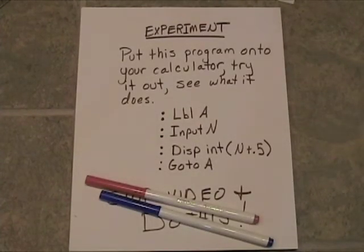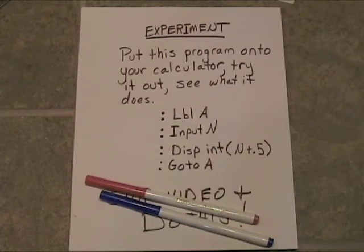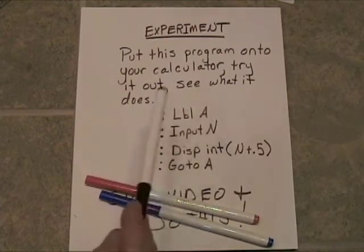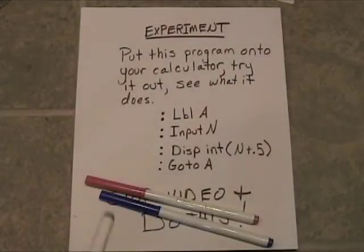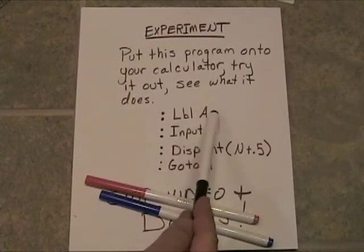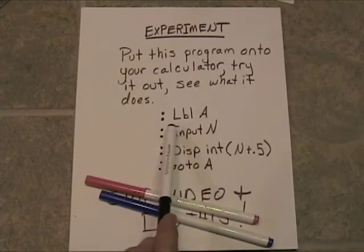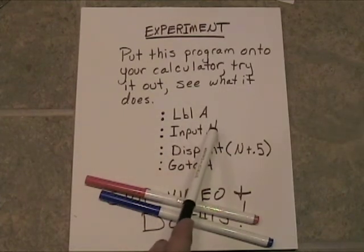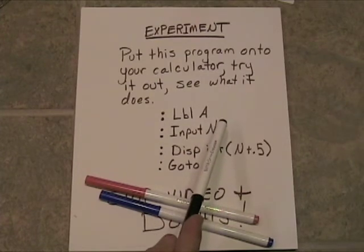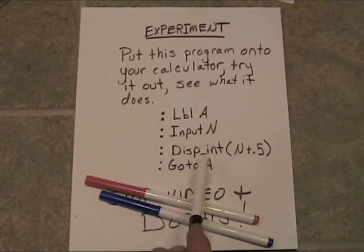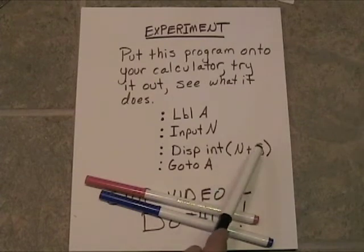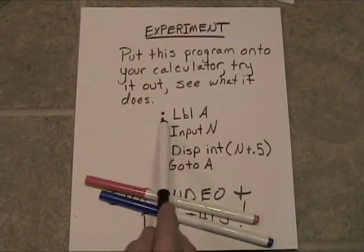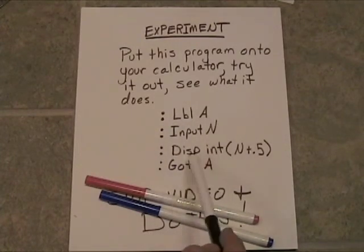Now here's a cool experiment. We want you to put this program onto your calculator, try it out, and execute it after you've got it in there to see what it does — it's probably going to surprise you. The program has four lines: first, label A, which marks the spot in the program. Next, hit Program and go to I/O (Input/Output) and input N — when you execute, the computer will stop, give you a question mark, and wait for you to enter your own data. Then display the greatest integer function of N plus 0.5. Then it goes back to A, repeats the process, and lets you enter another number — and so on. Figure out how to get this on your graphing calculator and play with this.